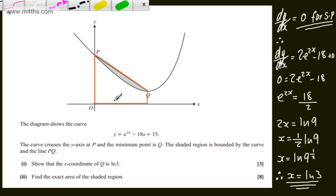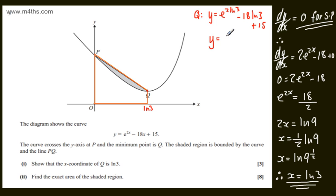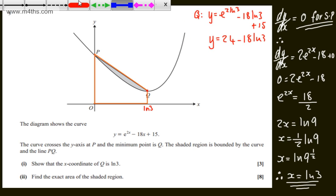This is one of a few different ways to do this. We have the natural log of 3 as the x-coordinate of Q. If we consider that point and find its y-coordinate: y equals e to the 2 times the natural log of 3, minus 18 times the natural log of 3, plus 15. This equals e to the natural log of 9, which is 9. So y equals 9 plus 15 minus 18 ln(3), giving 24 minus 18 ln(3).